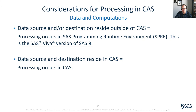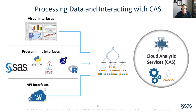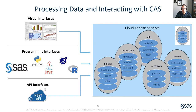You can process data and interact with CAS using a variety of interfaces, including visual interfaces, programming interfaces, or REST APIs. When processing data and interacting with CAS — whether via visual interfaces, programming interfaces, or REST APIs — CAS issues a CAS action behind the scenes. Each CAS action is grouped into a CAS action set based on functionality.